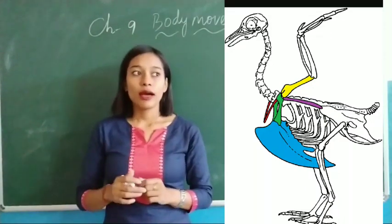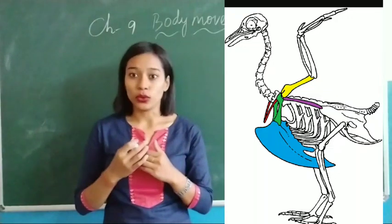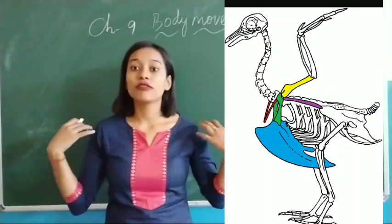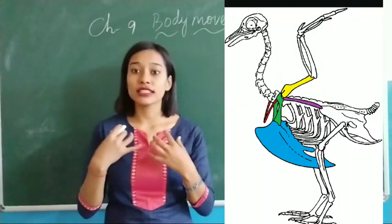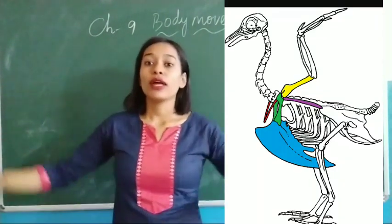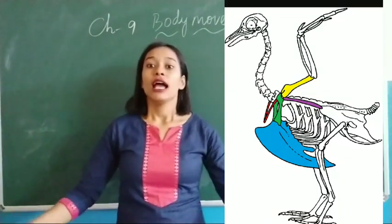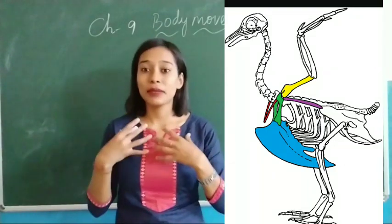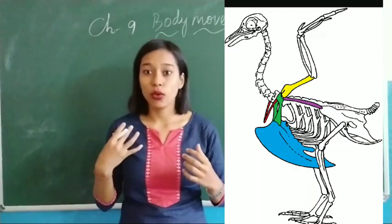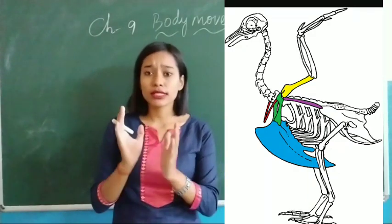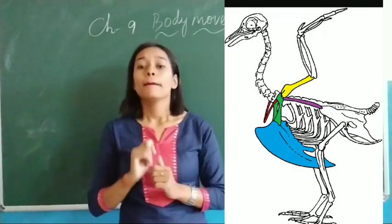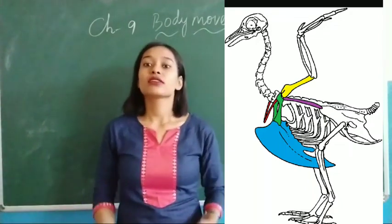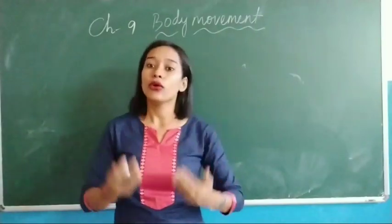Birds have a braced bone which is very strong and holds the muscles of the wings. When they flap their wings — the wings are flapped with the help of muscles embedded in the braced bone — it creates a force which helps them to fly. The body is also designed as a streamlined structure.